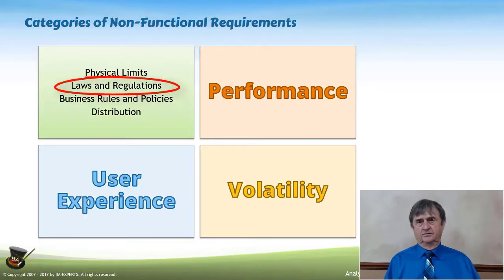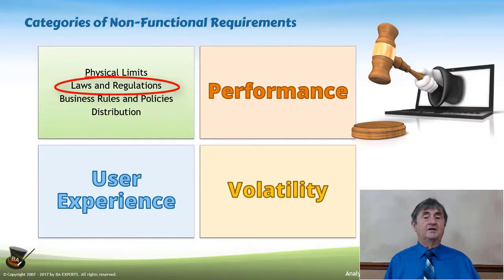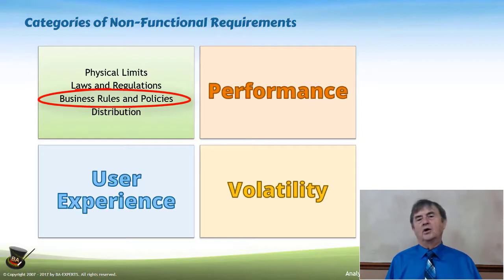Laws and regulations — we generally recommend that you stay legal. Any organization that has the authority to impose legal limits on what your application can do is a constraint you need to be aware of. Constraints, fundamentally, are externally mandated conditions that nobody on the project team can change. The next category, business rules and policies, sounds like it violates that, but unless you're on the project that creates and maintains those rules and policies, you'll be stuck living with them. If your project team does not have the authority to change them, then it is a constraint.